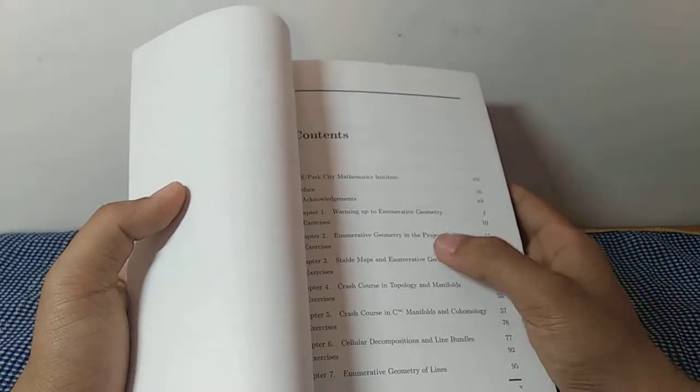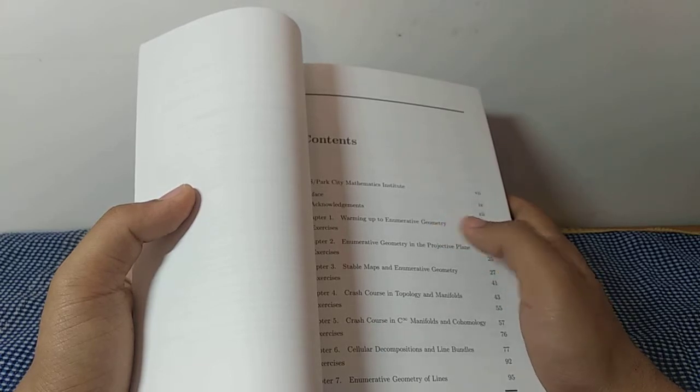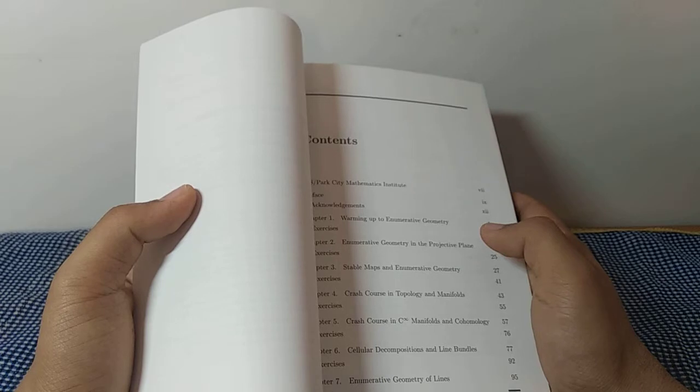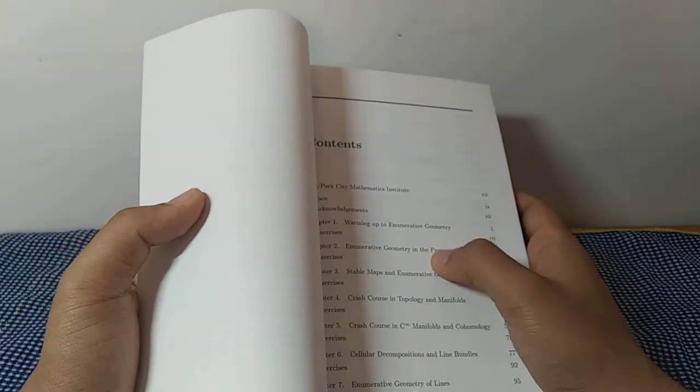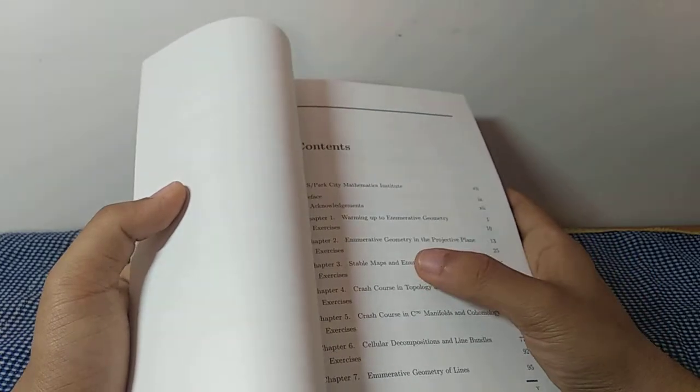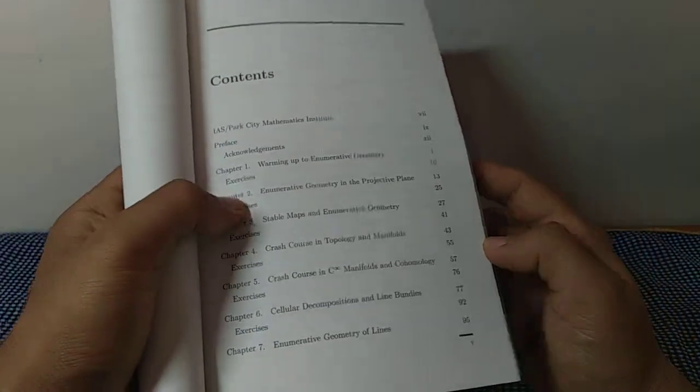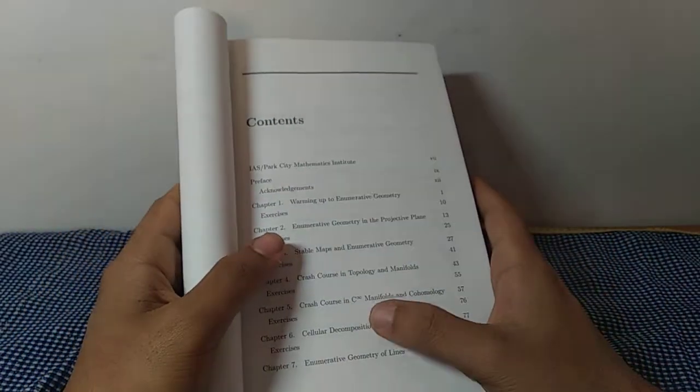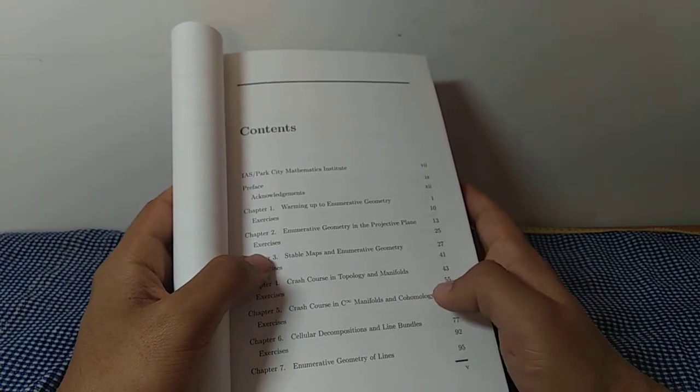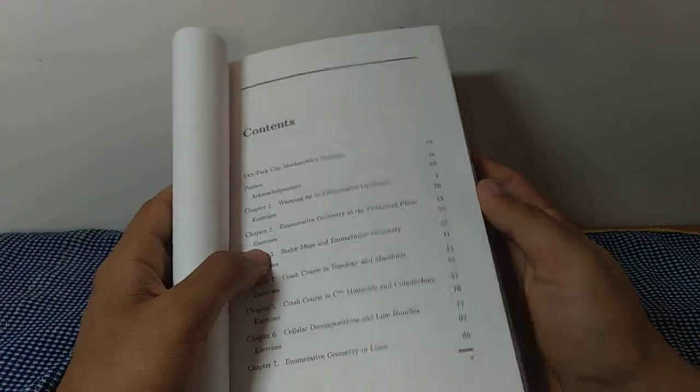Then it will directly dive into what all cases and test situations enumerative geometry is being applied like projective plane. Then there is a concept of stable map. Then there is topology and manifold which is quite essential to understand string theory. Then there is complex infinite dimensional manifold and cohomology, again that's very essential. And then at the last we have enumerative geometry of lines.